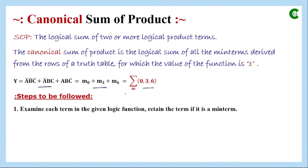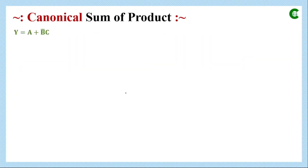All these steps will be clearer with examples. Here Y is a logical function equal to A plus B-complement C. This function has three variables A, B, and C. In the first step we examine all terms one by one to see whether each term is a minterm or not. The first term is only A — it doesn't have B and C — so the first term is not a minterm.